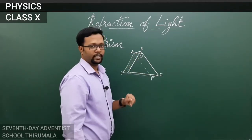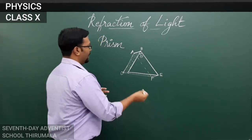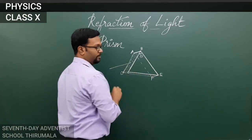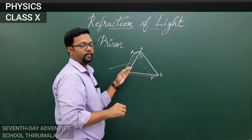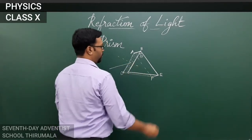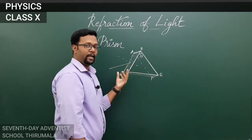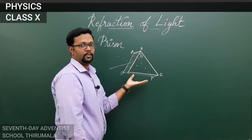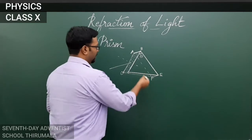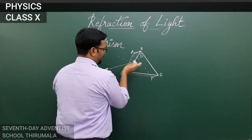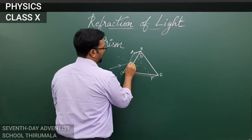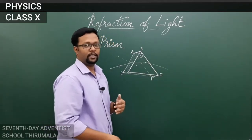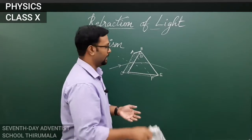The angle between the two refracting surfaces is called the angle of the prism, represented as theta. The common edge between both refracting surfaces is called the refracting edge of the prism. A light ray falling on this refracting surface enters from a rarer medium, air, into a denser medium, glass. If it enters obliquely, it will bend towards the normal, strike the next surface, and bend away from the normal while emerging.